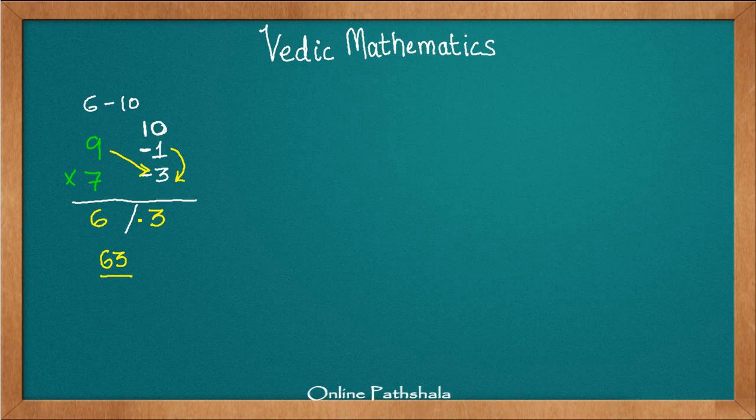The other way in which you can arrive at the same number is you can also do the cross subtraction, 7 minus 1. That would also give you 6. So you can just look at the number and figure out which one is easy for you. In fact the multiplication sign has come because of this cross that we did here.